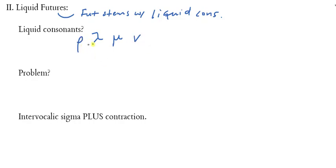The letters lambda, mu, nu, and rho. Technically, if you were to ask a linguist which of these consonants are true liquids, they would say rho and lambda are. Mu and nu are nasals. But, since all four behave the same way here, they just kind of throw them all in as liquid consonants. What's the problem with liquid consonants? We're talking about liquid futures. When we add a future tense formative to any future stem, what tense formative is it? It's a sigma.